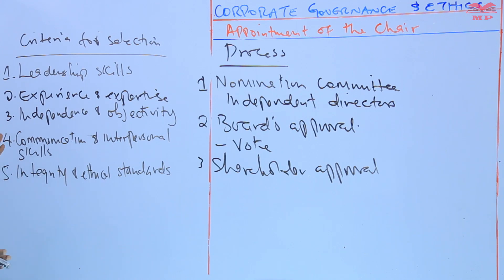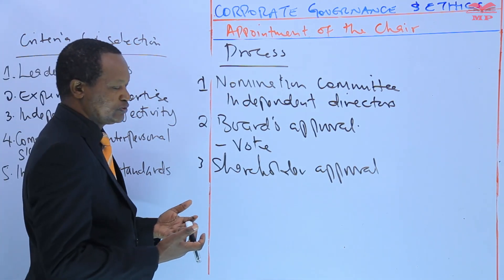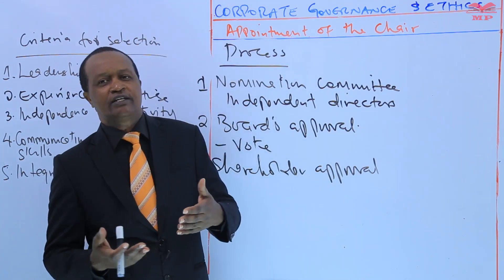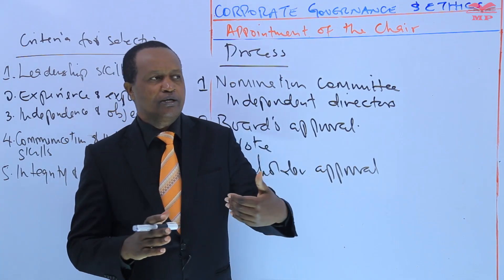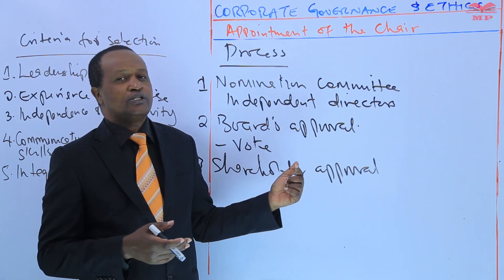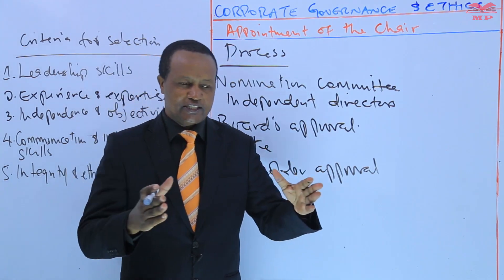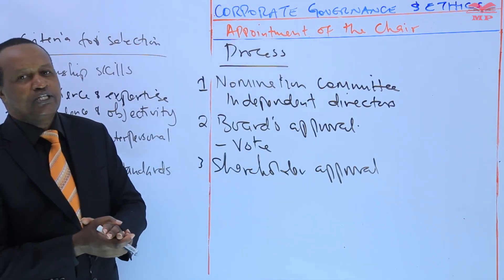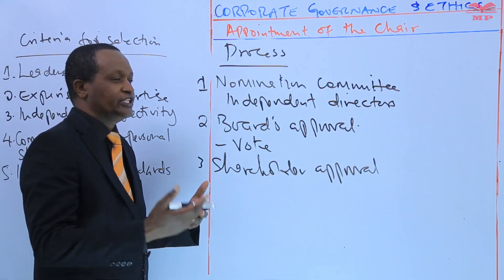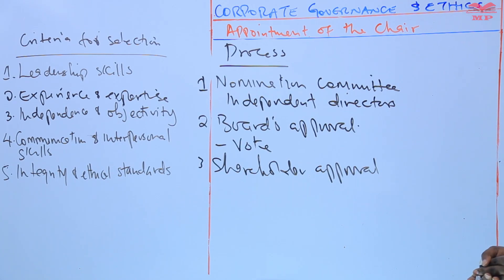In conclusion, the term of appointment for the chair can vary depending on the company's governance structure, such as the articles of association or bylaws. Some companies have fixed terms, while others allow for reappointment based on performance and the board's discretion. It is also important for the board to have a robust succession plan in place for the chair position, to ensure a smooth transition of leadership and minimize disruption in the event of the chair's departure.